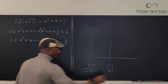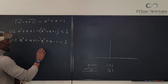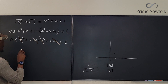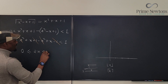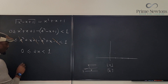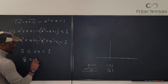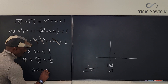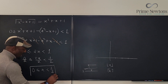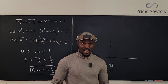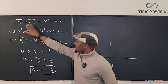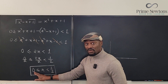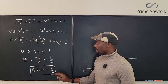After cancellation, the x² terms cancel and the ±1 terms cancel, leaving us with 0 ≤ 2x < 1. Dividing every part by 2, we get 0 ≤ x < 1/2. This is key information: whatever x is for this equation, x is between 0 and 1/2 — it can be 0 but it cannot be 1/2.